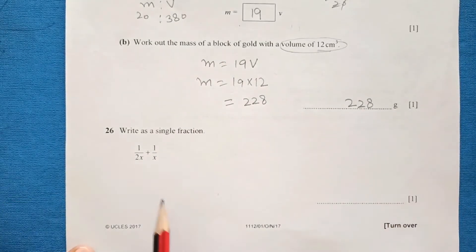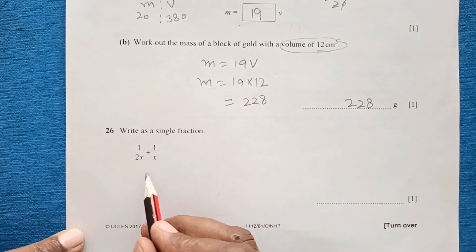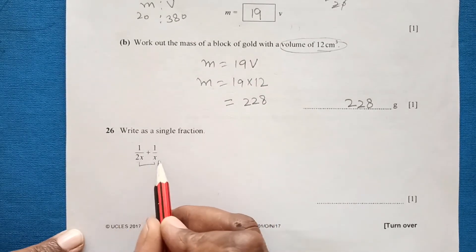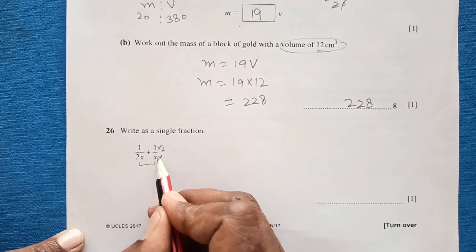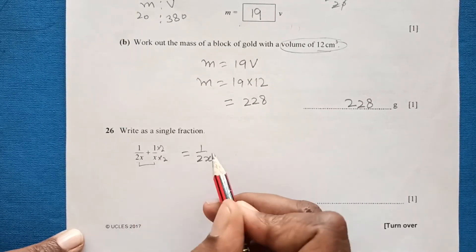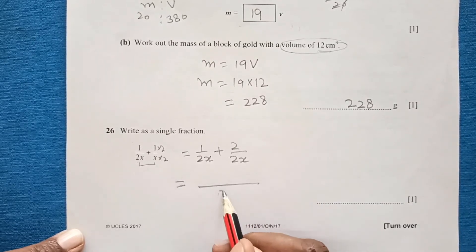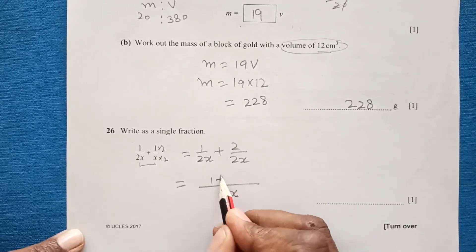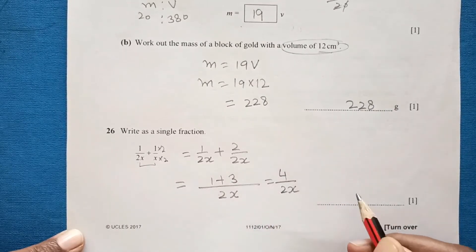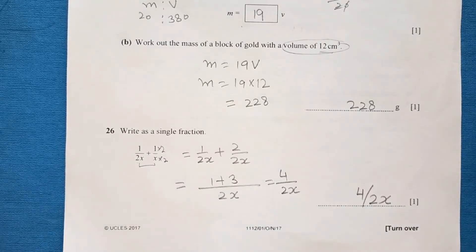Question 26: Write as a single fraction. We need to make the denominators the same. We have 1 over 2x and 1 over x. Multiply the second fraction's numerator and denominator by 2 to get 2 over 2x. Now the denominators are the same, so we add the numerators: 1 + 2 = 3... giving 4 over 2x as the final answer.